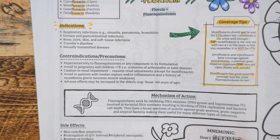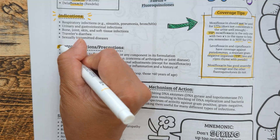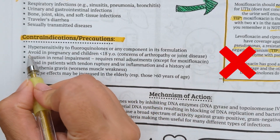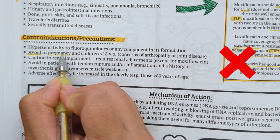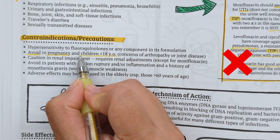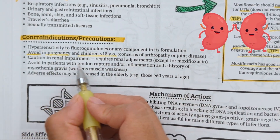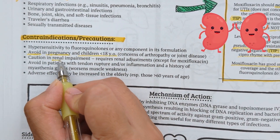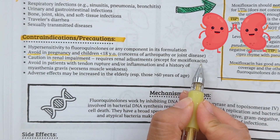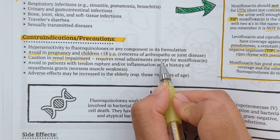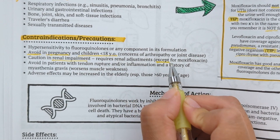Some contraindications and precautions to know about this class: fluoroquinolones should not be used in patients who are pregnant or in children less than 18 years old due to the risk of arthropathy, or joint disease. Use caution in patients with renal impairment as these drugs require renal dose adjustments — the only exception is moxifloxacin.